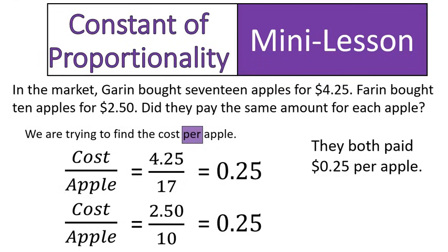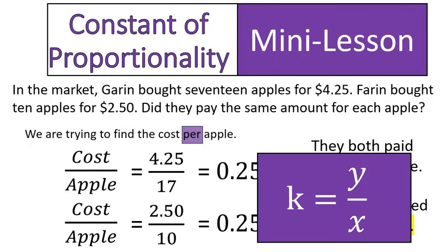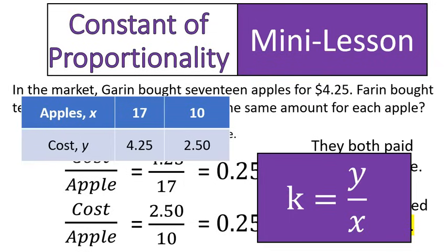Or in other words, there is a constant of proportionality — or in other words, there is a unit rate. This is my unit rate. It is also my constant. And if you go back to a previous lesson, we could have set this up in a table that lists out apples on the top and the cost on the bottom. We've seen this before, written out in this way.